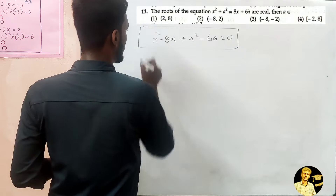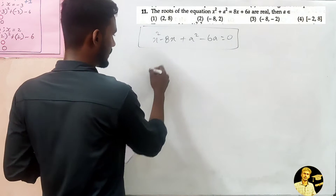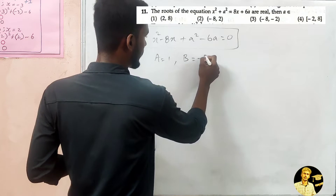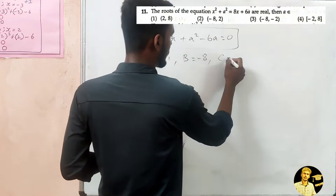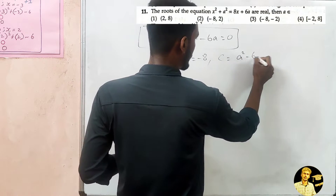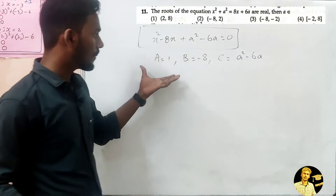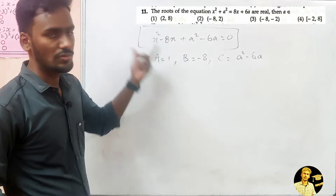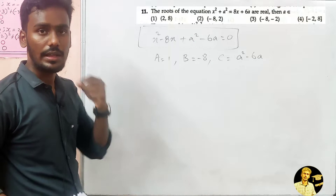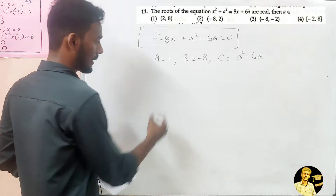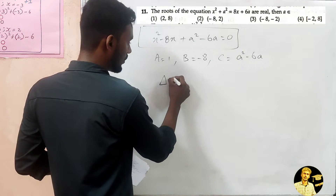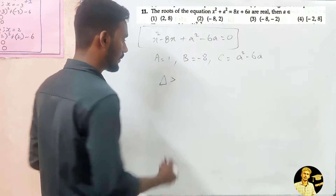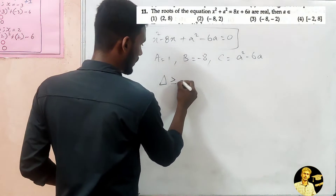We identify the coefficients: A = 1, B = -8, and C = a² - 6a. For the roots to be real, the discriminant condition applies — if the roots are real and equal, the discriminant is equal to 0.